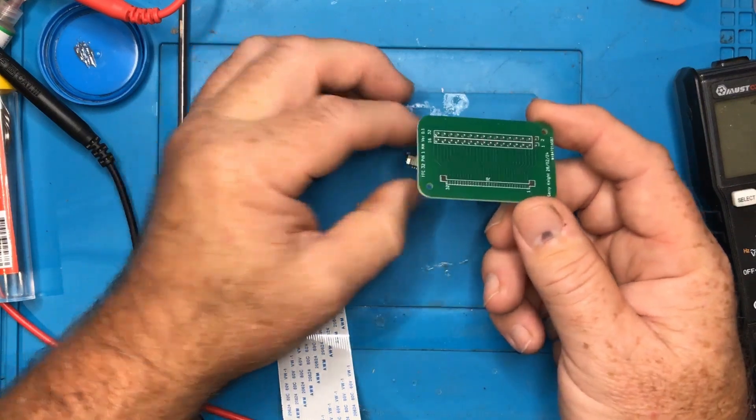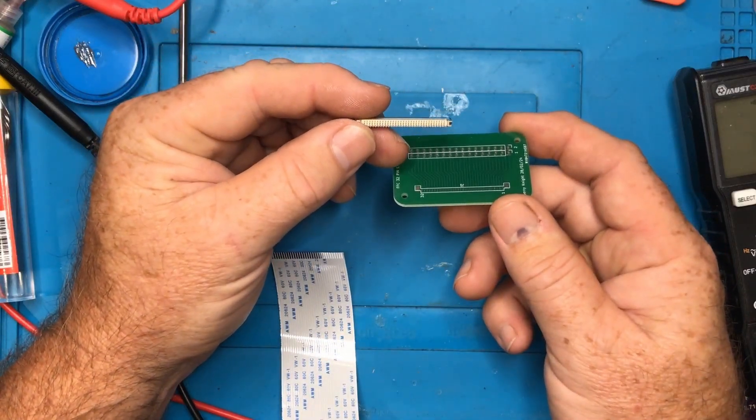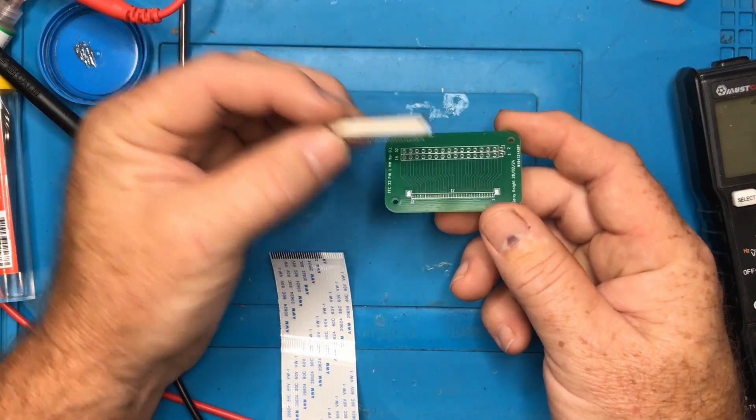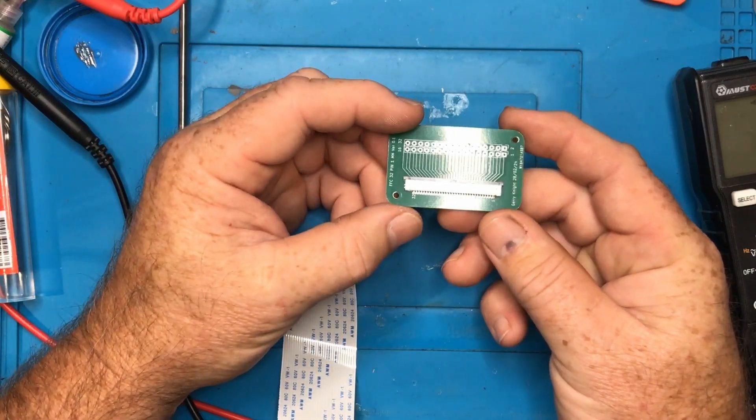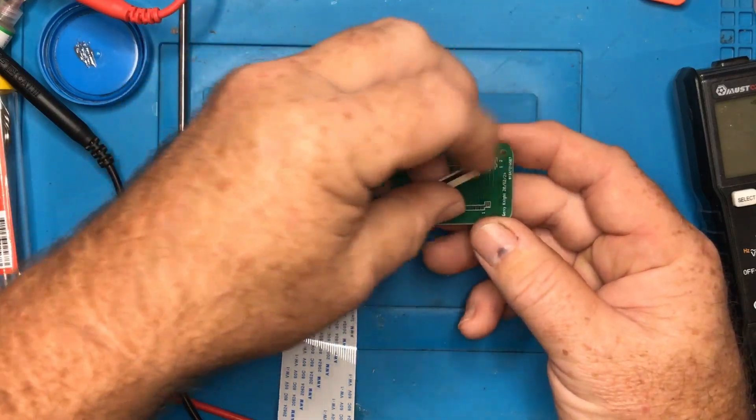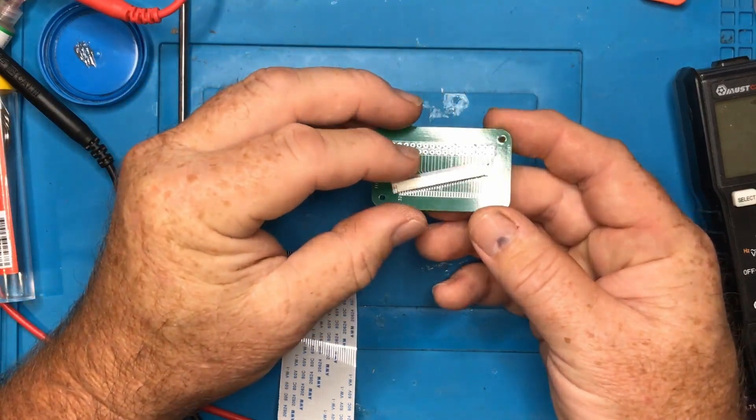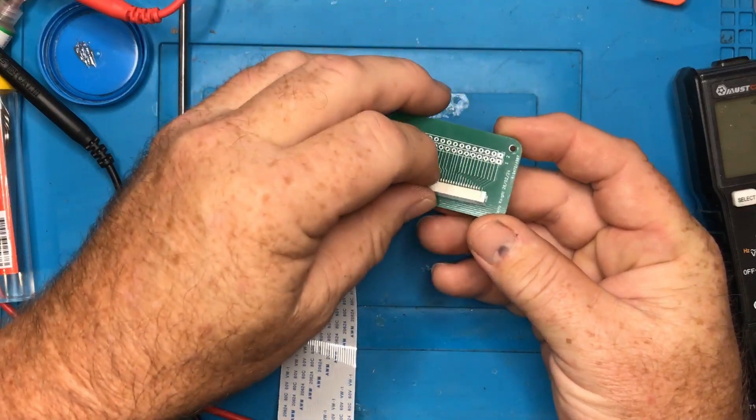So today I need to solder on this surface mount 32 pin connector onto my board. Oh, and by the way, I put it on backwards. This is the way that the connector has to be soldered on and it's actually backwards. I wanted it to be facing this direction.